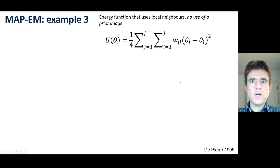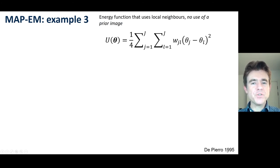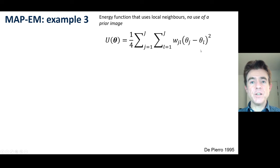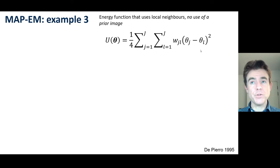A third example, more advanced, was by de Piero in 1995. This does not need a prior image, and so it only operates on the current theta you're trying to find. It does an assessment on it in a very similar fashion to the definition of that energy function u, where we had a potential function psi.